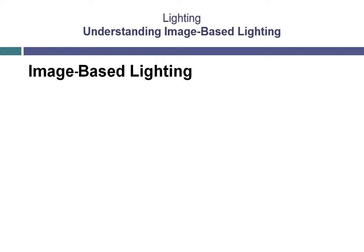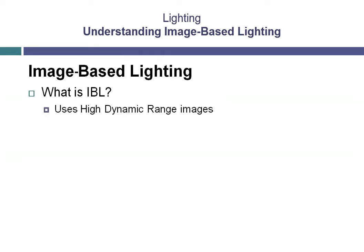Over the past several years, scene lighting has evolved from basic lighting configurations that provide a good quality of lighting to highly realistic image-based lighting. Image-based lighting, or IBL, is a form of scene illumination. IBL uses high dynamic range panoramic images, which hold far more visual information about a scene than a traditional image, such as a JPEG file.